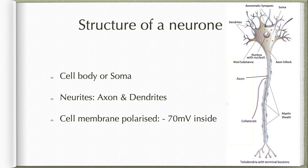Each neuron contains a cell body or soma and multiple processes called neurites, of which one is an elongated axon and the others are dendrites. The cell membrane is polarized, maintaining a negative 70 millivolts on the inside, which is an important feature allowing for the conduction of nerve impulses.